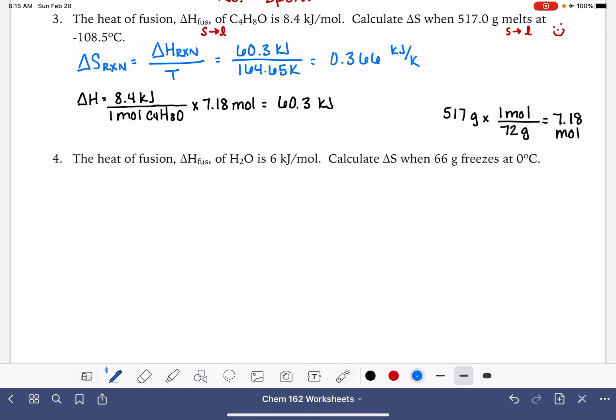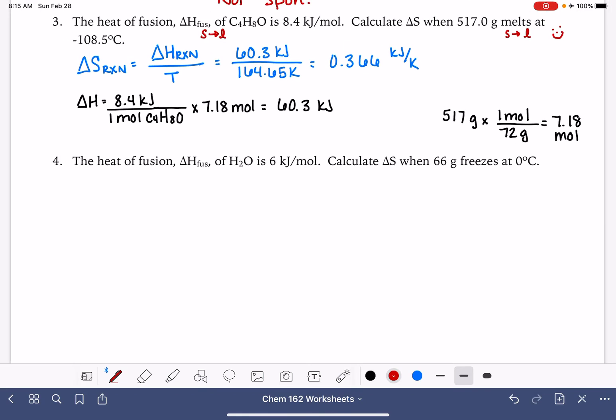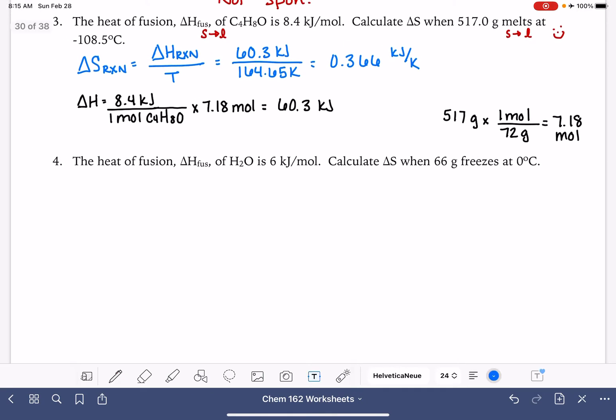Let's take a look at the next example. We have another change in entropy of fusion, which is solid to a liquid melting, and we have 6 kilojoules per mole. So our delta H is 6 kilojoules per 1 mole of water, which is what we're using in this problem. We're being asked to calculate the delta S when 66 grams of water, so we need to do a gram to mole conversion.